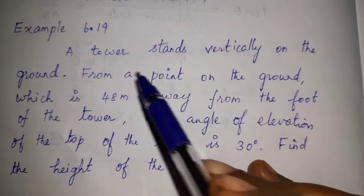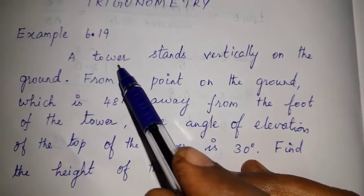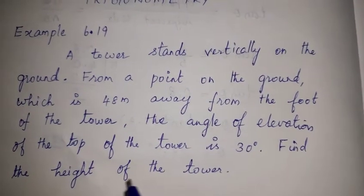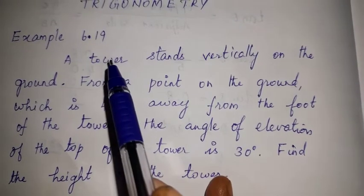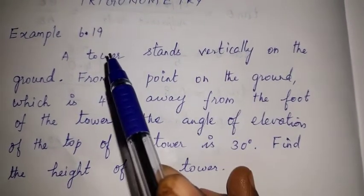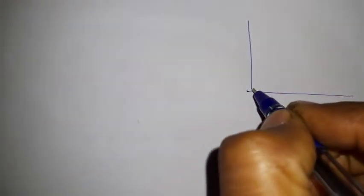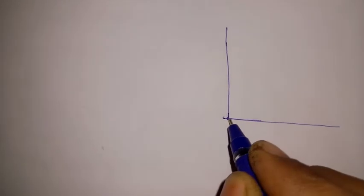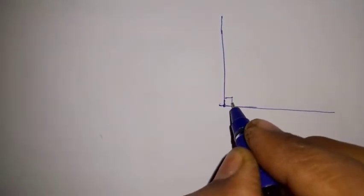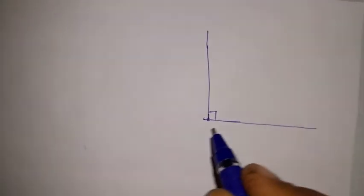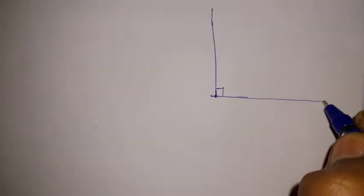So let's look at the diagram. We have a ground level here, and the tower is a vertical line standing on the ground. This forms a right triangle. The tower represents the vertical side, and the ground is the horizontal side, giving us a right angle at the base of the tower.